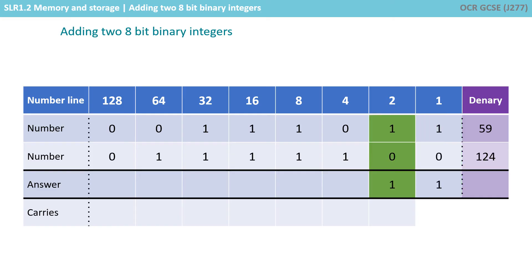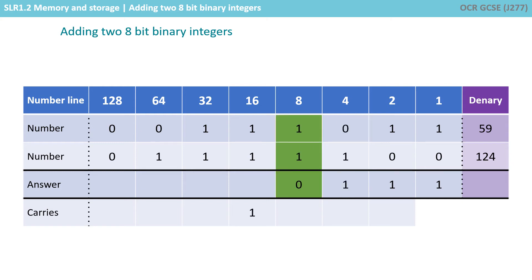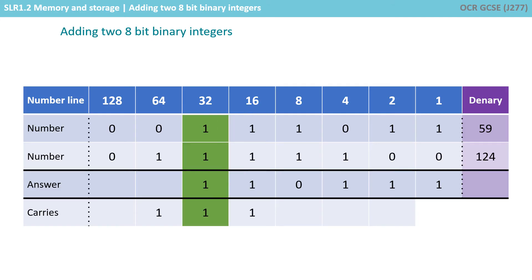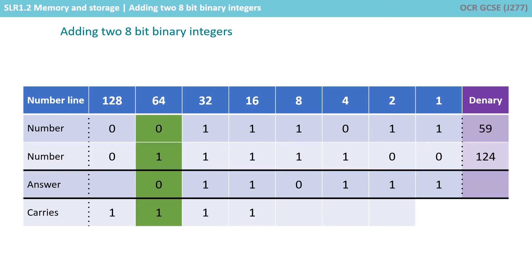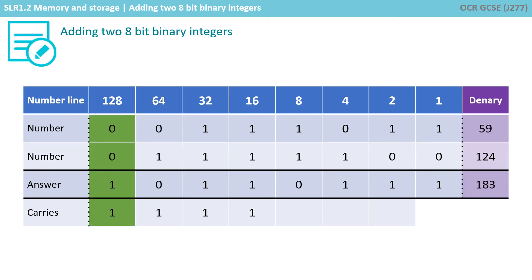A 1 and 0 is 1. A 1 and 0 is 1. A 0 and 1 is 1. A 1 and 1 is 0, carry a 1. Then 1, 1, and the carry 1 is 1, carry the 1. Again, 1, 1, and a carry 1 is 1, carry the 1. Then 0, 1, and the carry 1 is 0, carry the 1. And finally, 0, 0, and the carry 1 is 1.